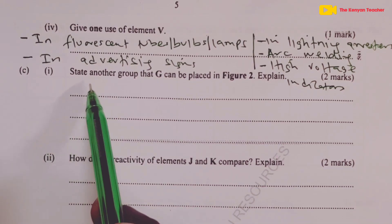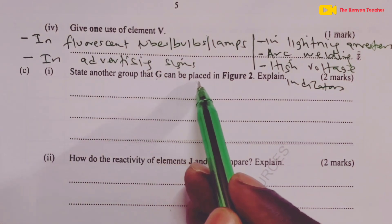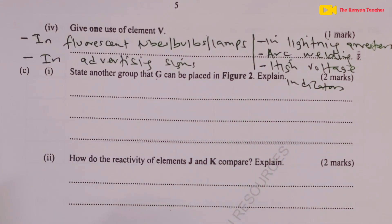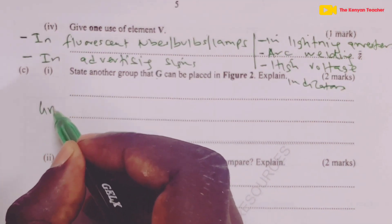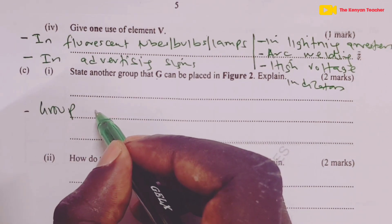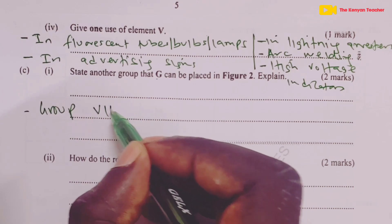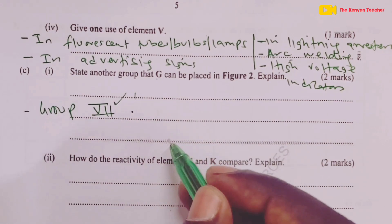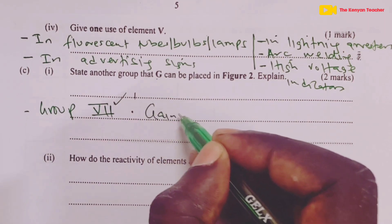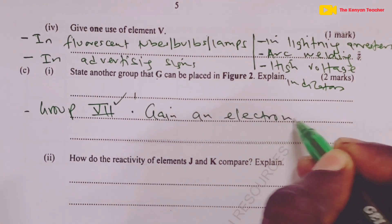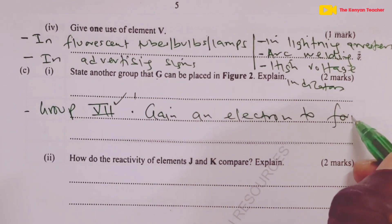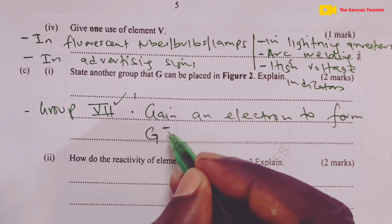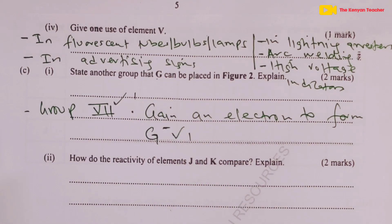We are asked to state another group that G can be placed in. G is actually hydrogen, and hydrogen can be placed in either Group 1 or Group 7 — so the answer is Group 7. The explanation is that hydrogen can gain an electron to form an ion of G⁻, just like the halogens in Group 7 do.